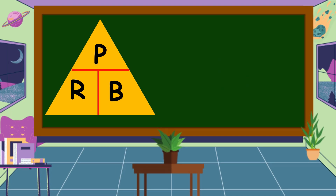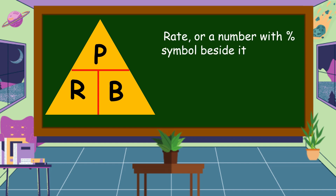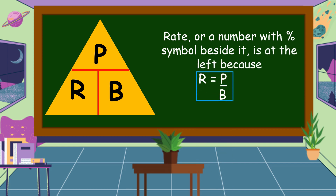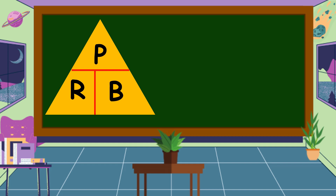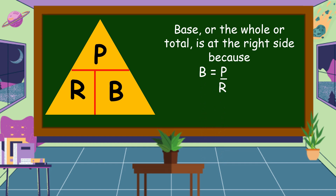The next important element in our T-Hence triangle is the rate, or a number with a percent symbol beside it. It is at the left because rate is equal to percentage divided by base. The last but not the least important element is the base, or the whole or total. It is at the right side because base is equal to percentage divided by rate.